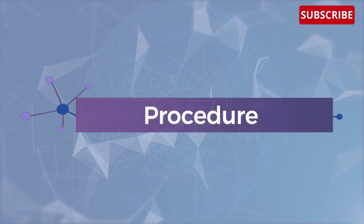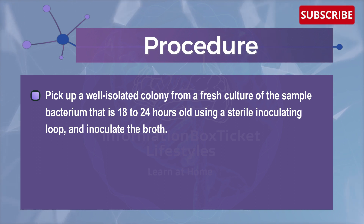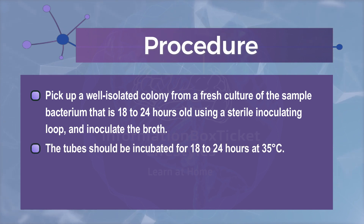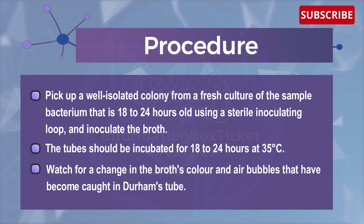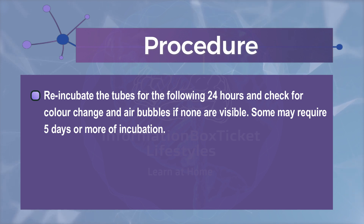Now let's begin with the procedure of the carbohydrate fermentation test. Pick up a well-isolated colony from a fresh culture of the sample bacterium that is 18 to 24 hours old using a sterile inoculating loop, and inoculate the broth. The tubes should then be incubated for 18 to 24 hours at 35 degrees Celsius. Watch for a change in the broth's color and air bubbles that have become trapped in Durham's tube. Re-incubate the tubes for the following 24 hours and check for color change and air bubbles if none are visible. Some may require five days or more of incubation.